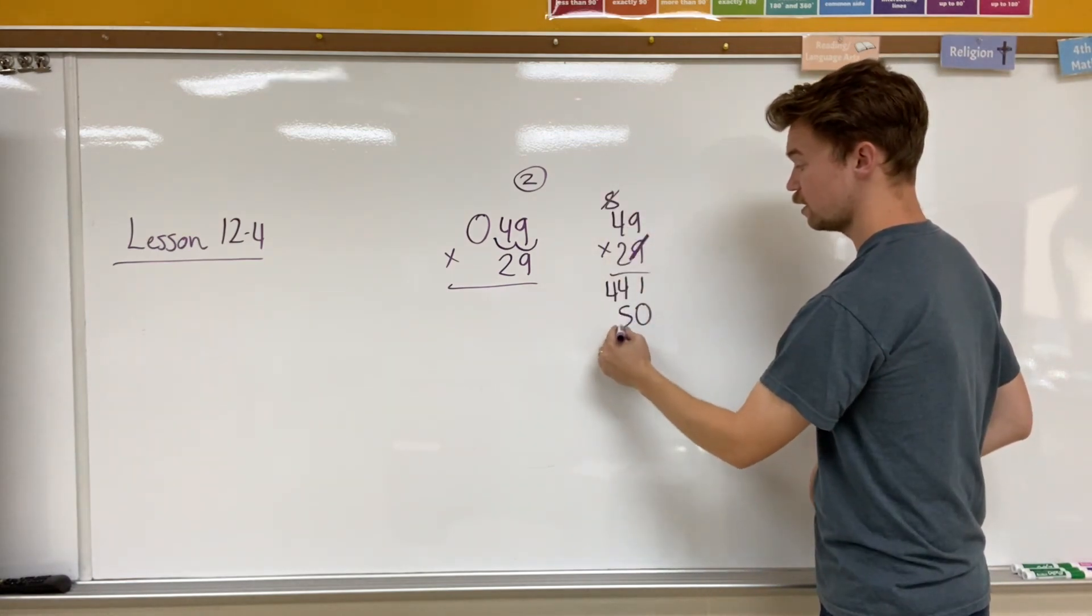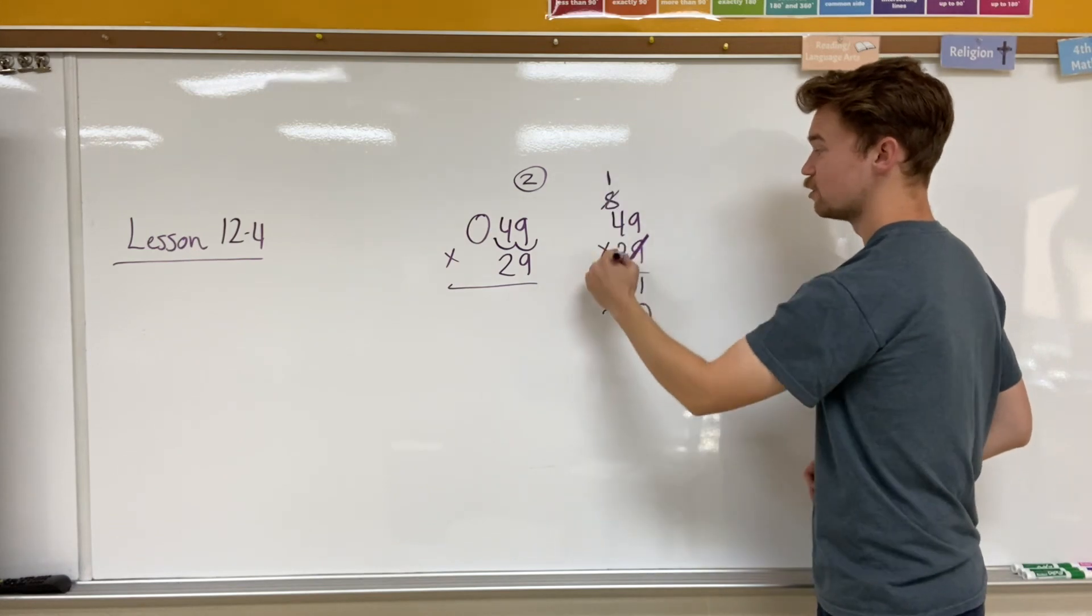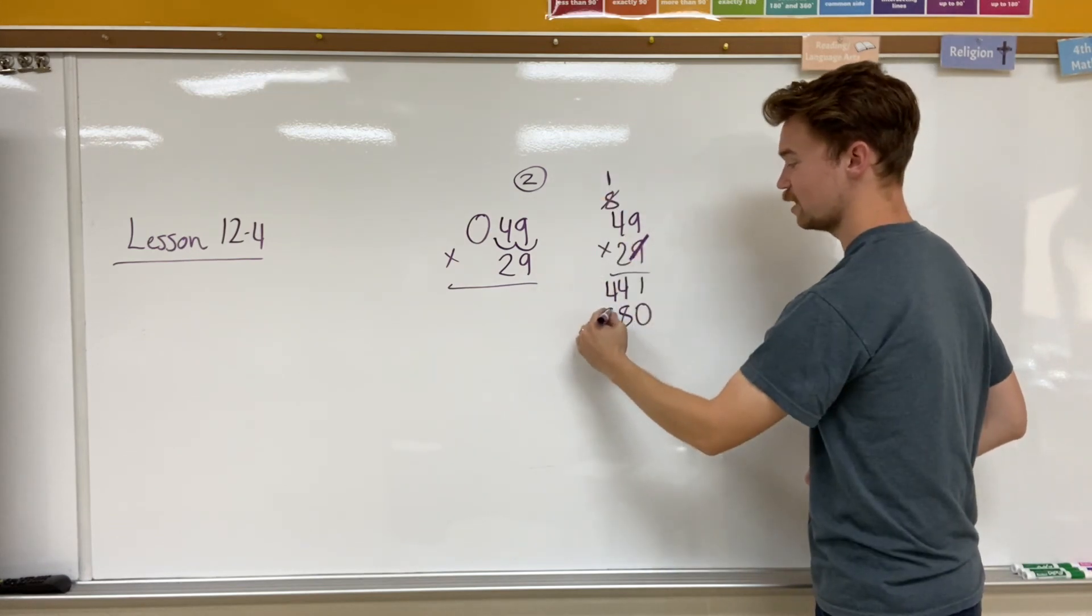Now I have 2 times 9 is 18. And 2 times 4 is 8. Oops, 18. There we go. 2 times 4 is 8 plus 1 is 9. There we go.